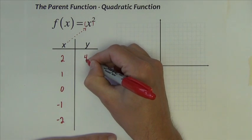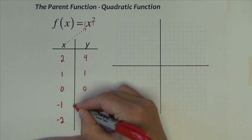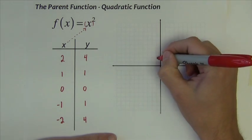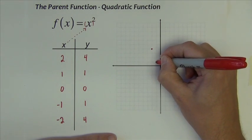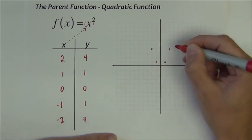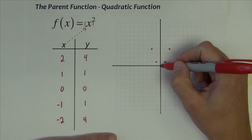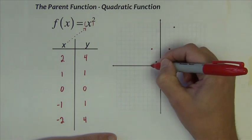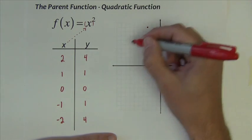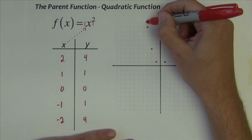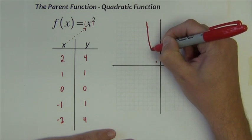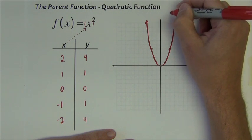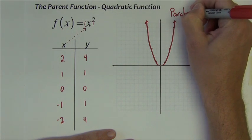So 2 to the second power is 4, 1 squared is 1, 0 squared is 0, negative 1 squared is 1, negative 2 squared is 4. We can even plot one more. If I do an x value of 3, I would get 9. 3 squares to 9, and negative 3 squares to 9.